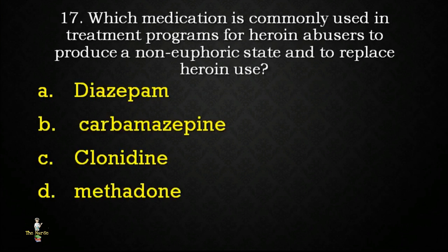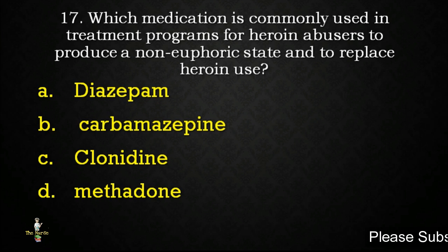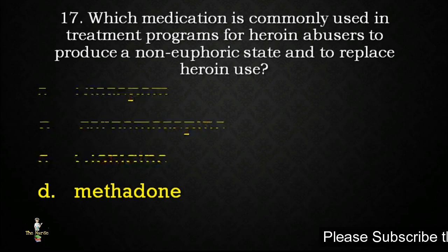Next question: which medication is commonly used in treatment programs for heroin abusers to produce a non-euphoric state and replace heroin use — diazepam, carbamazepine, clonidine, or methadone? Correct answer is methadone.